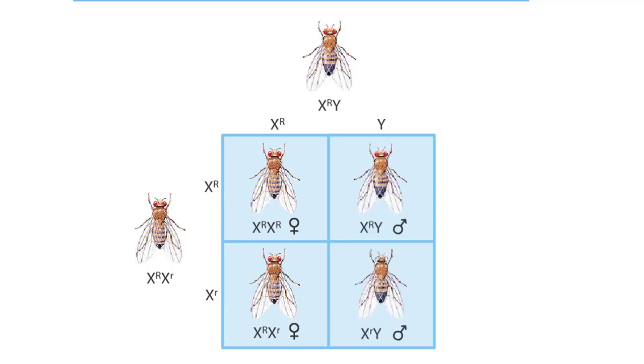The male offspring can receive only one allele for eye color, which is from their mother. She gives half of her offspring an allele for red eyes and half an allele for white eyes. Therefore, half of the males will have red eyes and half will have white eyes.